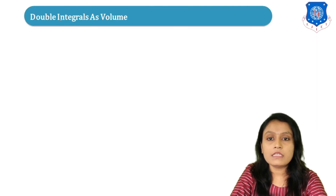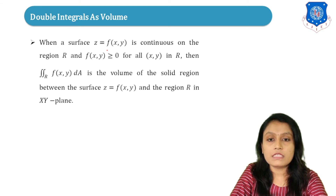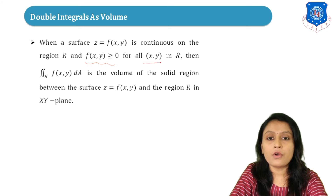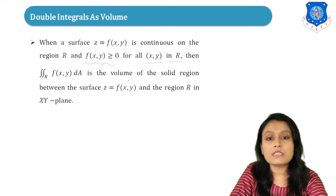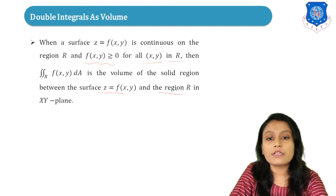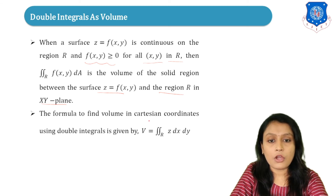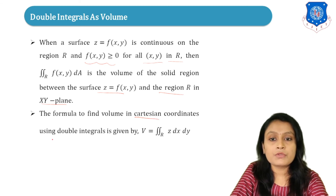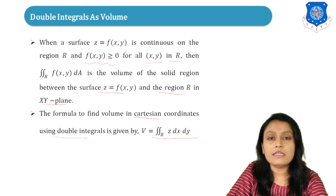Now we move to the next topic: double integrals as volume. When a surface z equals f(x,y) is continuous on a region R and f(x,y) is greater than or equal to 0 for all x,y in R, then the double integral over region R of f(x,y) dA gives the volume of the solid region between the surface z equals f(x,y) and the region R in the xy-plane. The formula for volume in Cartesian coordinates is V equals the double integral over R of z dx dy.